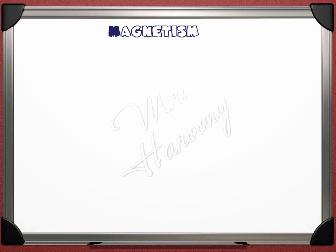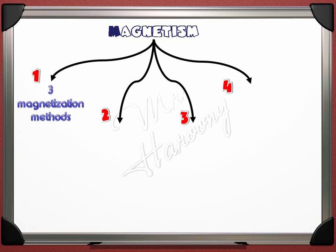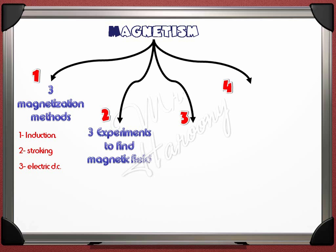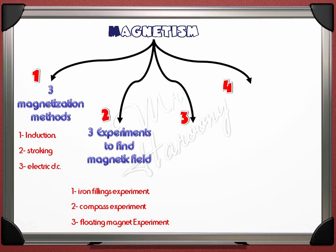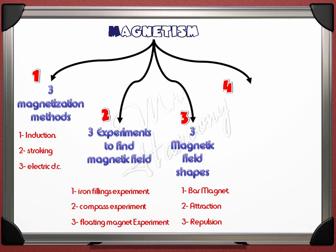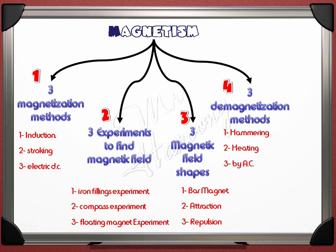In this lesson on Magnetism, we talked about four topics. Three methods of magnetization: induction, stroking, and magnetization by electric DC current. Three experiments to plot the magnetic field: the iron filings experiment, the compass experiment, and the floating magnet experiment. Three shapes of magnetic fields: the bar magnet field, the field of attraction between two opposite poles, and the field of repulsion between two same poles (north-north or south-south). And finally, three demagnetization methods: hammering, heating, and AC current.